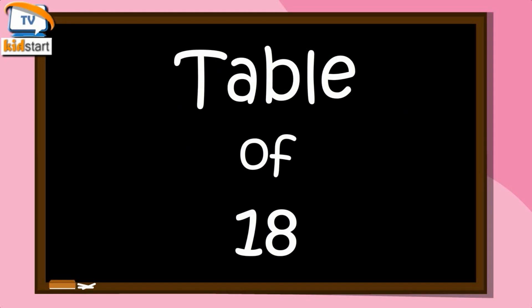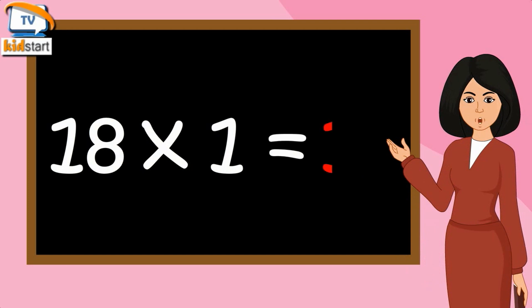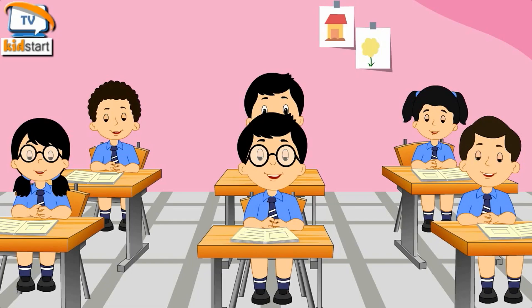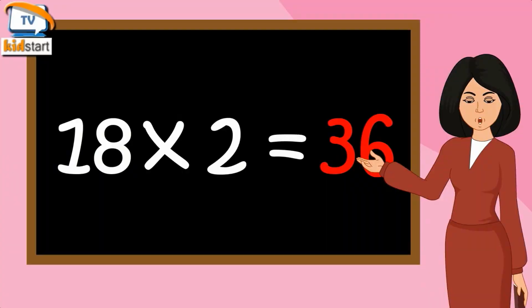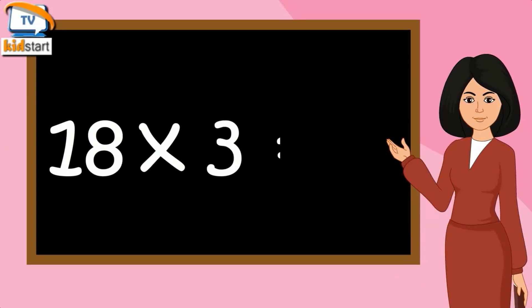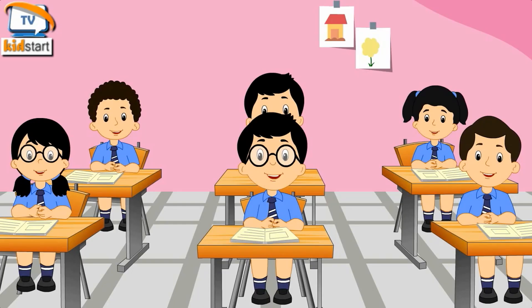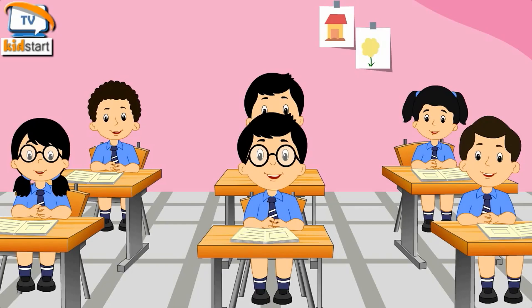Table of Eighteen. Eighteen ones are eighteen. Eighteen twos are thirty-six. Eighteen threes are fifty-four.